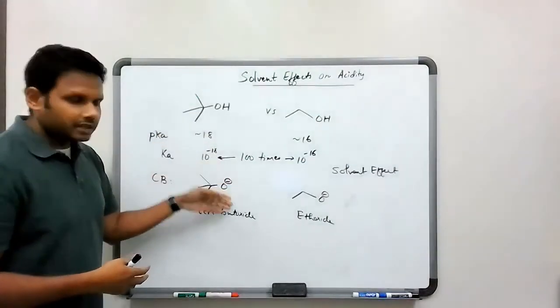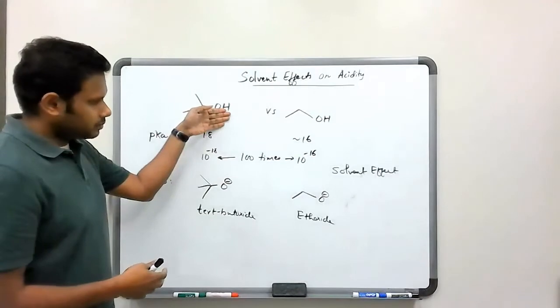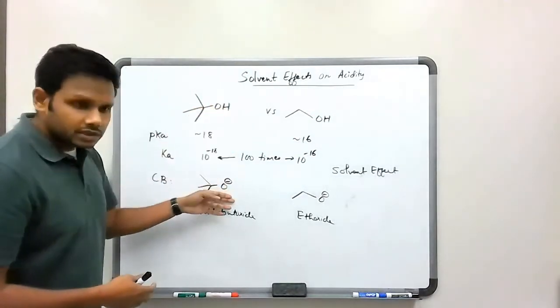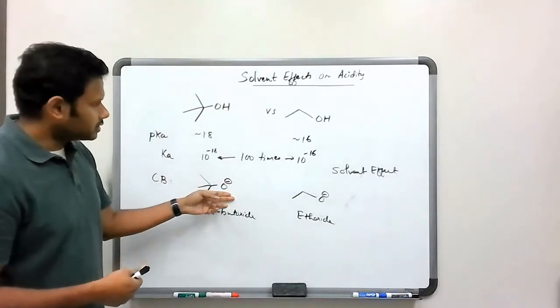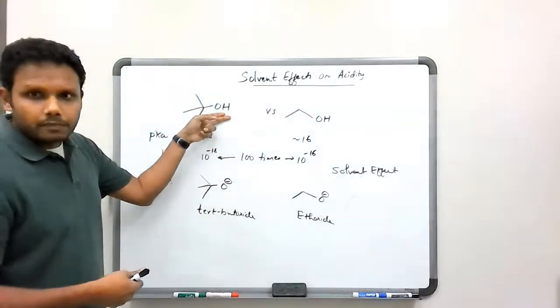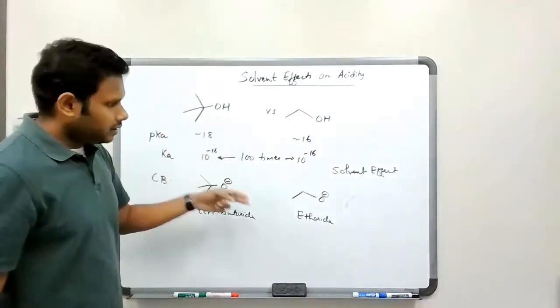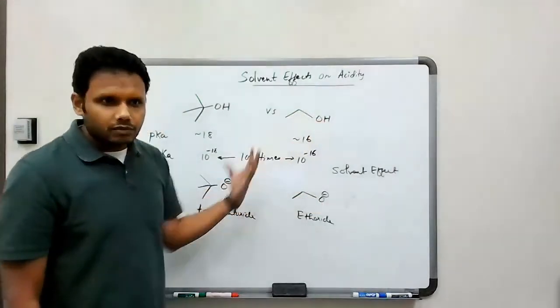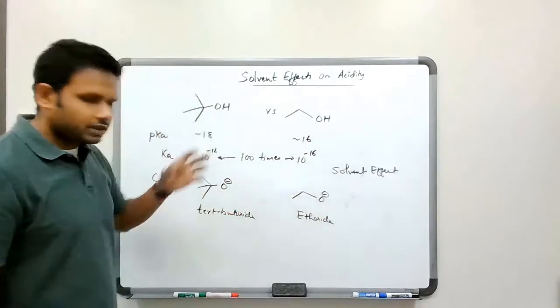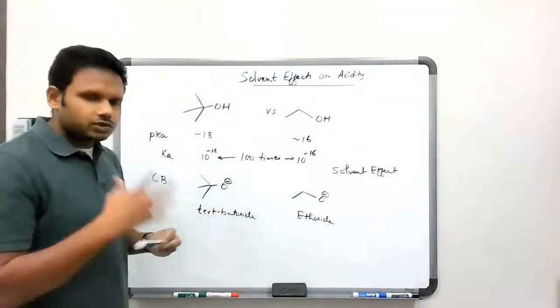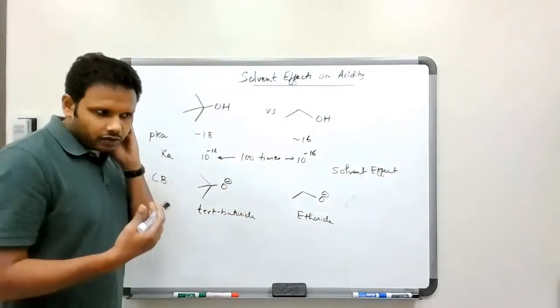Or since this is less stable, this would be unstable. This is unstable or less stable. So that means this would be less acidic. And this is more stable, so that is relatively more or less unstable, so that would be more acidic. That's the argument there. Sort of a weird argument, actually.